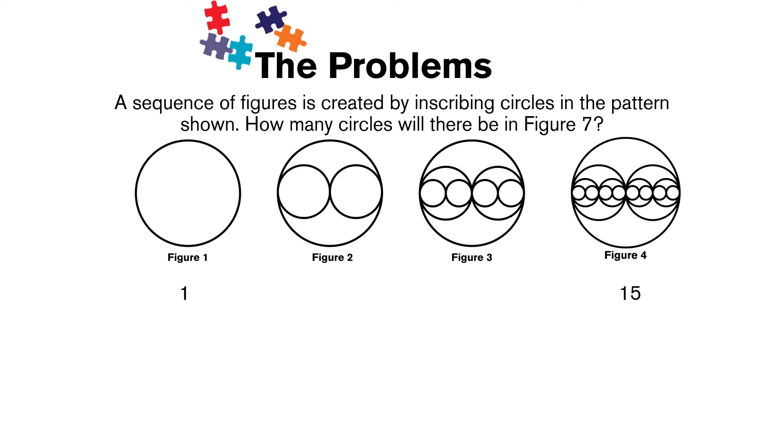So the number of circles we have in figure 1 is 1. When we move to figure 2, we have 3. When we move to figure 3, we take the 2 smaller circles and inscribe 2 smaller circles inside of each of them, so we're adding 4 more circles.